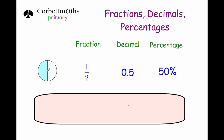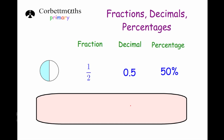Here we've got a circle and half of it is shaded in blue, which represents the fraction one half — there are two sections and one is shaded. As a decimal number that's 0.5 because 1 divided by 2 is 0.5, and as a percentage, a half is 50%.